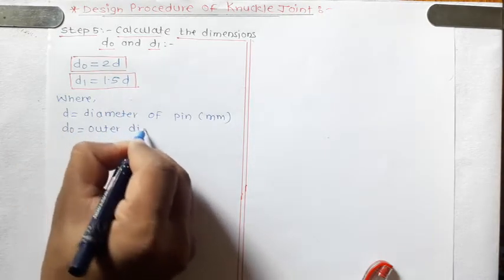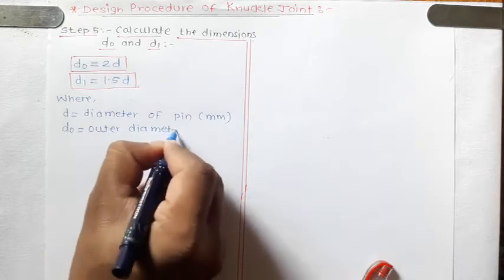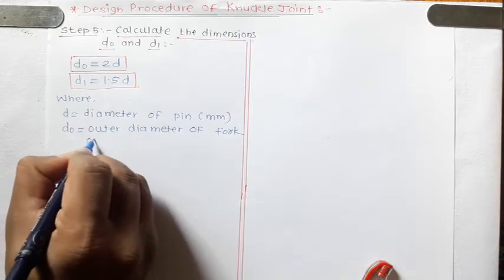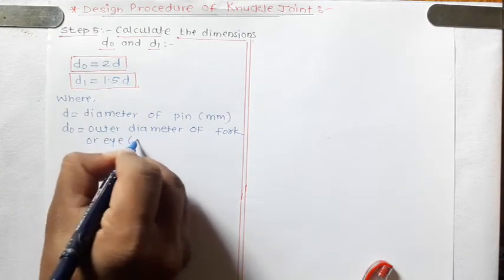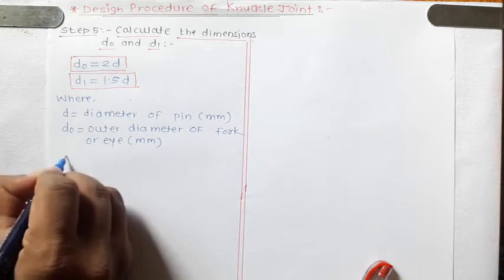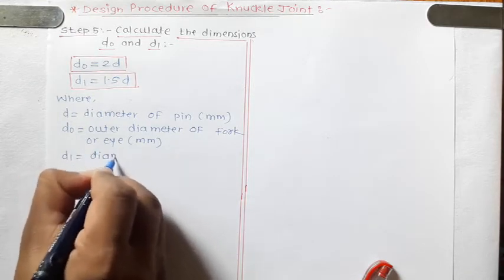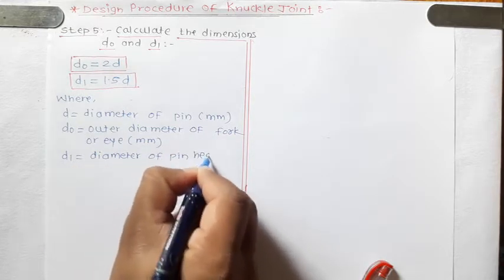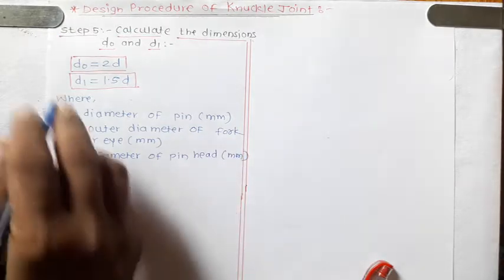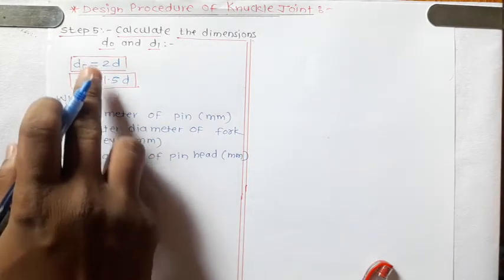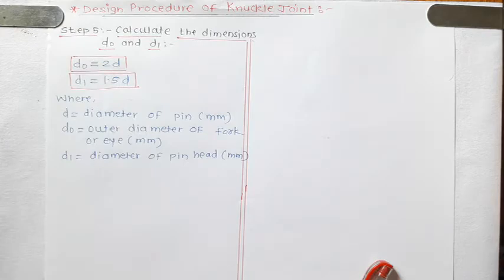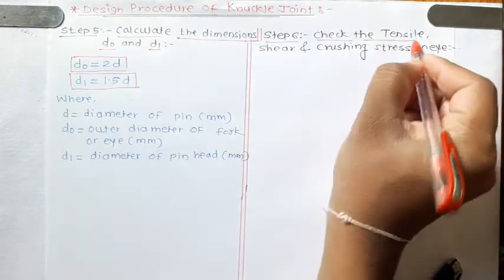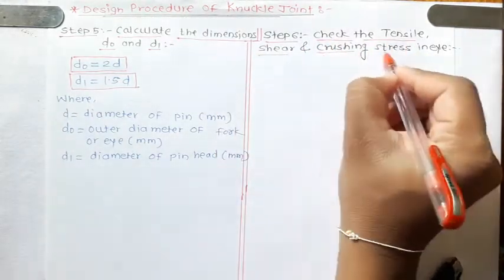DO is the outer diameter of the fork or eye in mm, and D1 is the diameter of the pin head in mm. That completes step number five, where we calculate these two dimensions from standard relations. Step number six is to check the tensile, shear, and crushing stress in the eye.